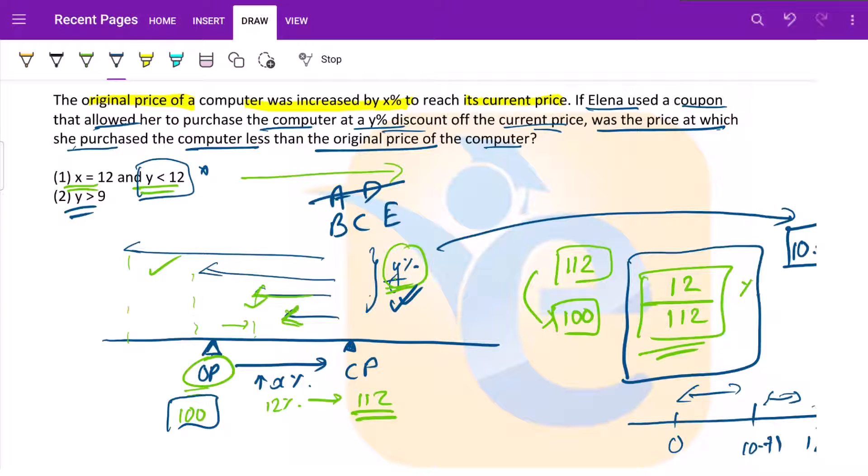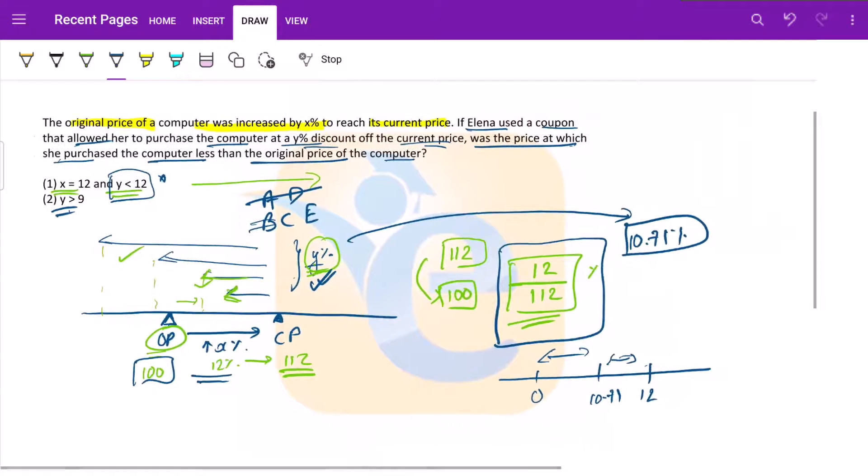Y is greater than 9. Does not really help. Does not say anything to us about X. So means nothing. Option B cannot be the answer.